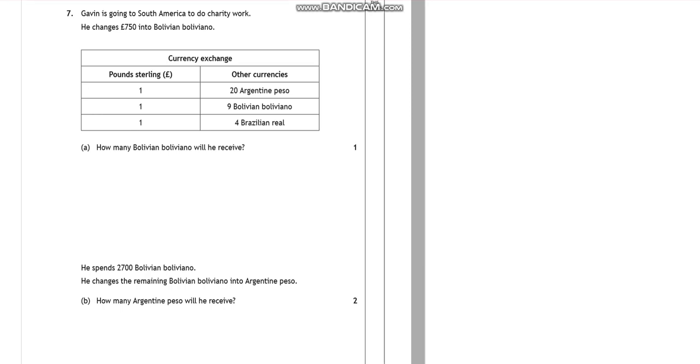Okay, so how many Bolivian money will they get? He's changing 750 pounds. So up here we know that one pound is nine Bolivian coins. Okay, so one pound is equal to nine, I'm just going to call them BBs or something, and I want to work out 750. So question mark, how do I get from one to 750? Well, I have to times them by 750, don't I?